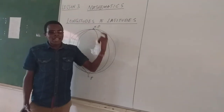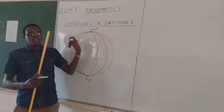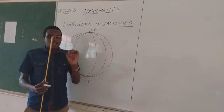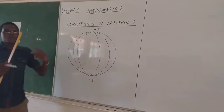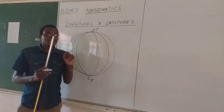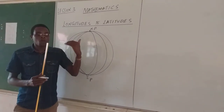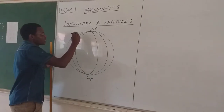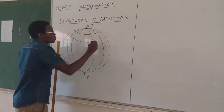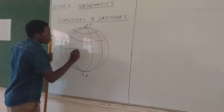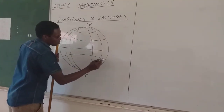Now, when we talk about latitudes — because it is a combination, there is no time we can talk about longitudes without mentioning latitudes — the moment we talk about latitudes, we say these are the imaginary lines which are running from the East to the West, all the way around the globe. All of them from West to East — we call them latitudes.